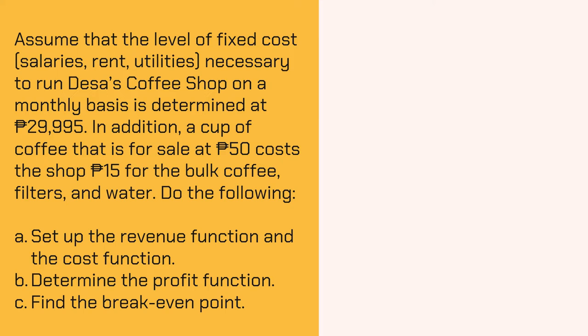Let's have this example. Assume that the level of fixed cost, salaries, rent, utilities necessary to run Desa's Coffee Shop on a monthly basis is determined at P29,995. In addition, a cup of coffee that is for sale at P50 costs the shop P15 for the bulk coffee, filters, and water. Do the following: A, set up the revenue function and the cost function. B, determine the profit function. And C, find the break-even point.